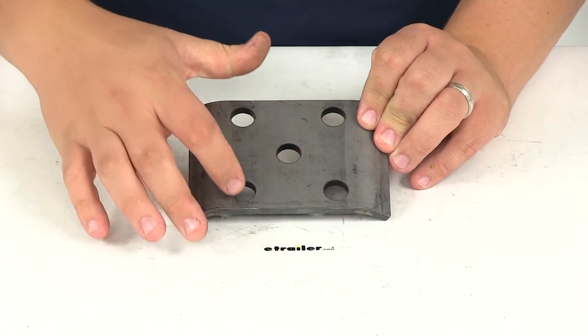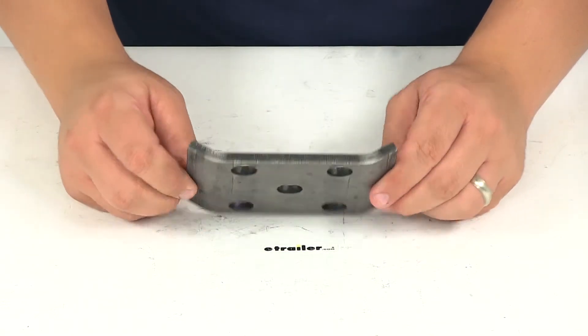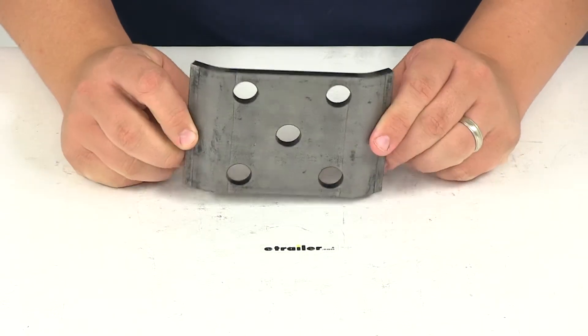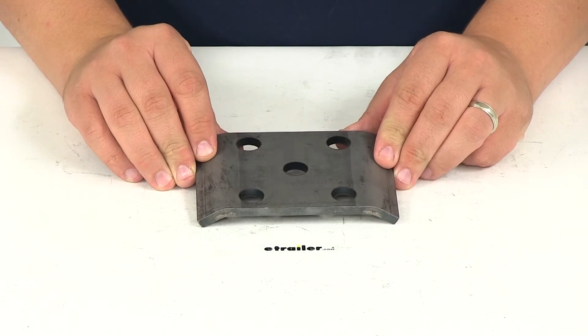And again, the diameter of these holes here on the corners are going to measure nine sixteenths of an inch. And if you need the U-bolts that are designed to work with this, you can use part number 175130, and again they are sold separately.